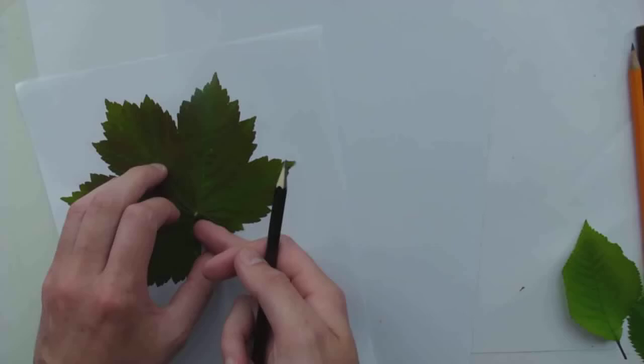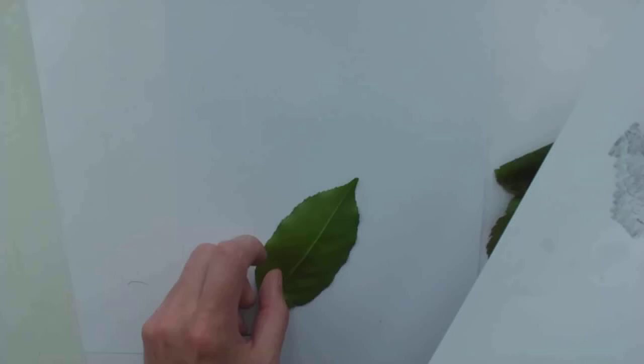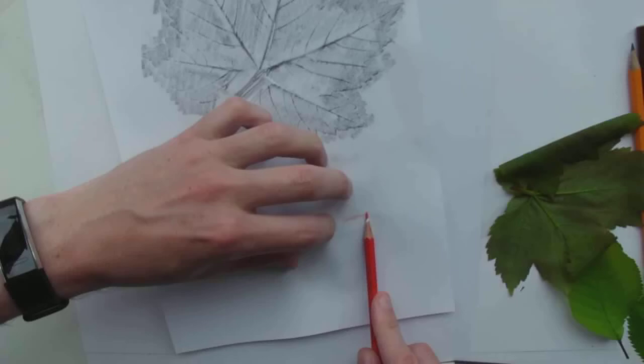And what we'll do is we get the next leaf and we put it, same thing, reverse side. Put this one down here. Now for this one we're going to use a coloring pencil.